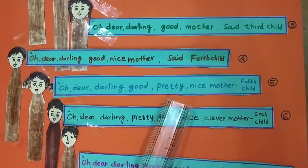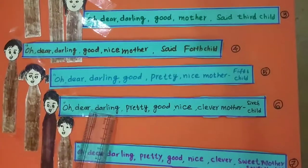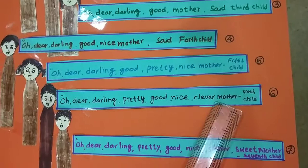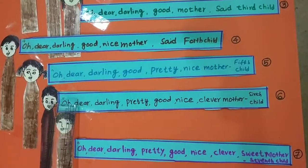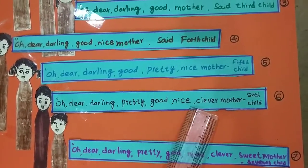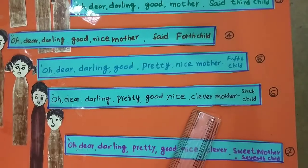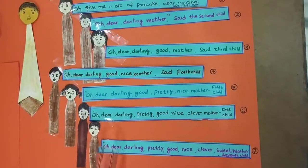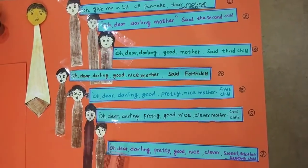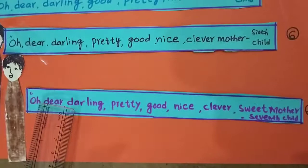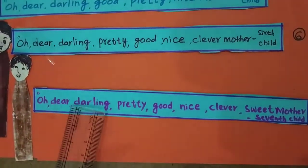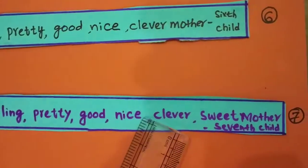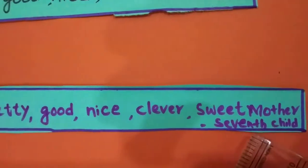To get pancake, the sixth child says: Oh, dear darling, pretty, good, nice, clever mother. And the seventh child says: Oh, dear darling, pretty, good, nice, clever, sweet mother — using all the adjectives to please his mother.